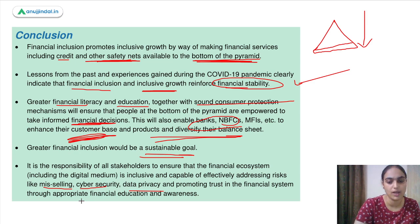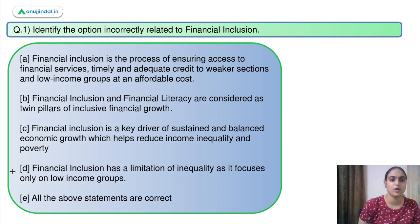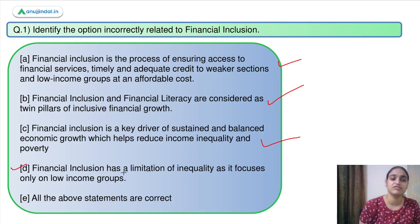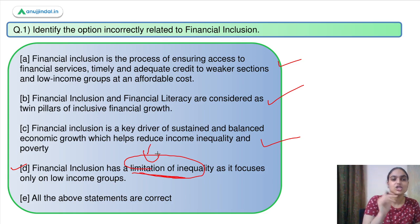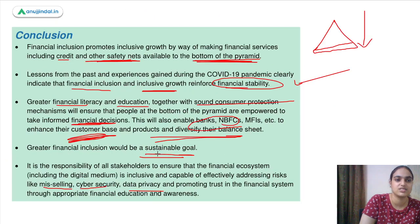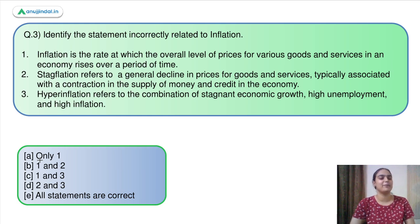Coming back to question one: the correct answer is option D. The remaining options are correct — they define financial inclusion, state the two pillars of financial growth, and discuss how financial inclusion helps reduce inequality. Option D is incorrect because it says financial inclusion has a limitation of inequality, whereas financial inclusion actually helps overcome that inequality. For question two, all three initiatives contribute to financial inclusion — the answer is option E. Now moving to the next concept and question.